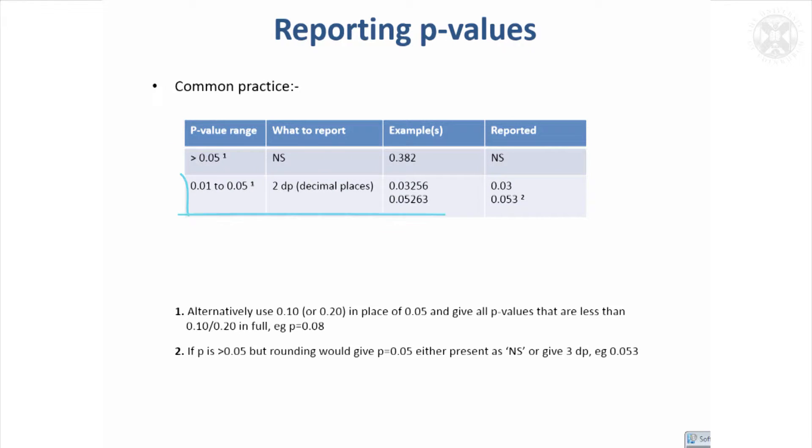Values that are significant but not highly significant, probably best to give them to two decimal places. If these were the exact p-values you got from your package, then abbreviate them.